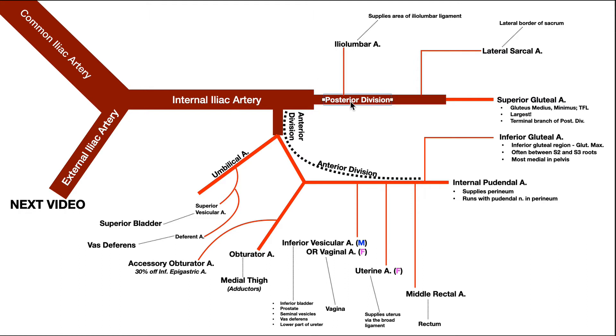So that's the superior gluteal artery. You can see that the posterior division is actually pretty simplistic: two true branches and one terminal branch.